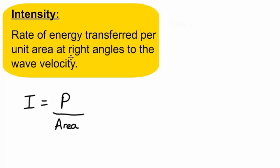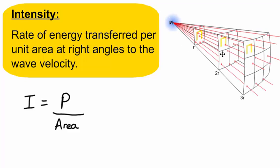Now, it talks about the area being at right angles to the wave velocity. All that means is that if the wave is travelling in this direction here, the area has been drawn at right angles to that wave. Let's do an example using this equation.